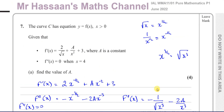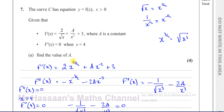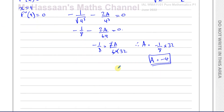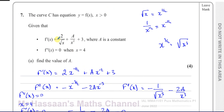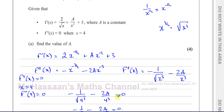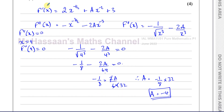So A is equal to negative 4, and that answers part A of the question. The original function has minus 4 over X squared. Part A was simply differentiating F'(x), replacing X with 4 in the second differential, equating it to 0, and solving for A.